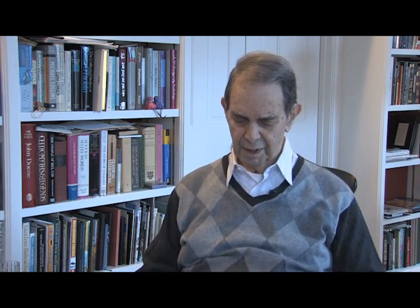The two physicists who took the field approach were Julian Schwinger — the professor I learned quantum field theory from when I went to Harvard — and a Japanese physicist, Tomonaga, who developed the same ideas. I'd like to read a quote from Tomonaga illustrating their approach: 'This discouraging state of affairs generated in many physicists a strong distrust of quantum field theory. But after long laborious calculations — less skillful than Schwinger's — we obtained a result which was in agreement with the Americans.' So here you had a field theory calculation based on fields.